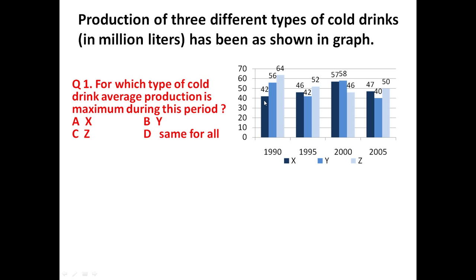In 1990 the production of X was 42 million litres, Y was 56 million litres, and Z was 64 million litres. Based on this graphical information, you have to answer the question: for which type of cold drink is average production maximum during this period, from 1990 to 2005?